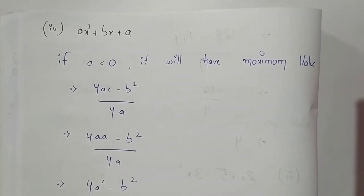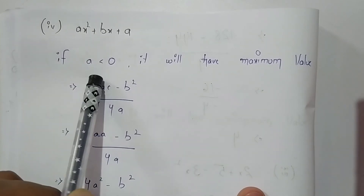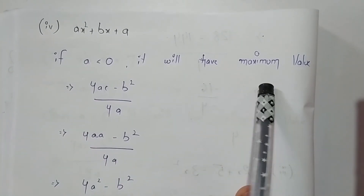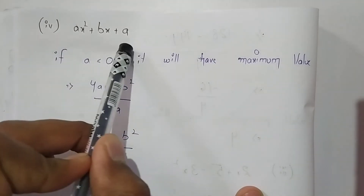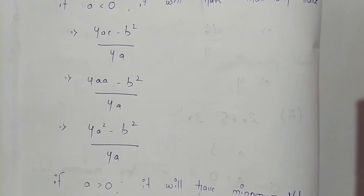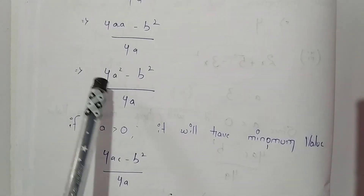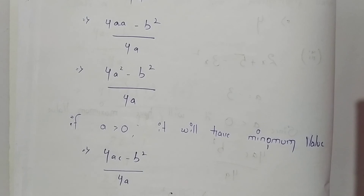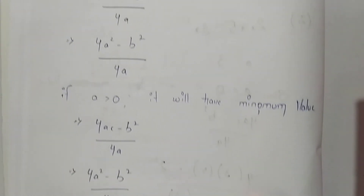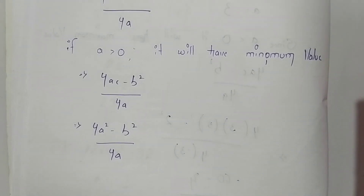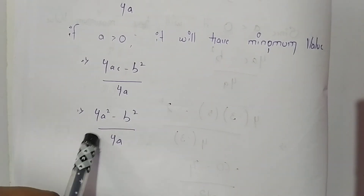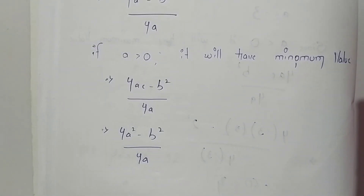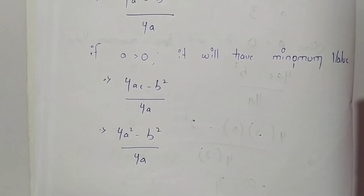In the first case, if a < 0, the expression will have a maximum value. Using the formula (4ac - b²) / 4a, with a in place of both a and c and b in place of b, we get (4a² - b²) / 4a as the maximum value. In the second case, if a > 0, the expression will have a minimum value, and the formula gives the same result: (4a² - b²) / 4a is the minimum value. These are the solutions to the given question.